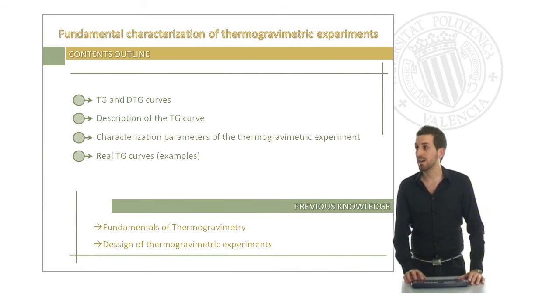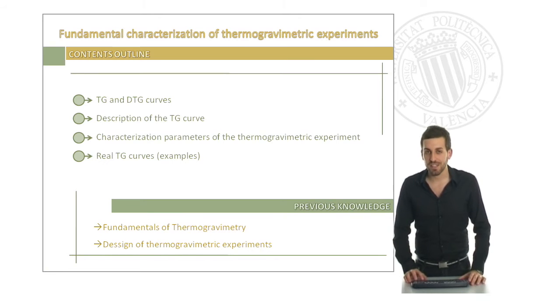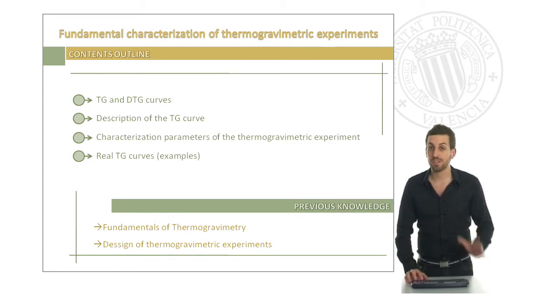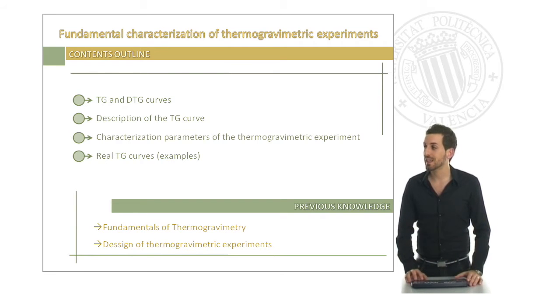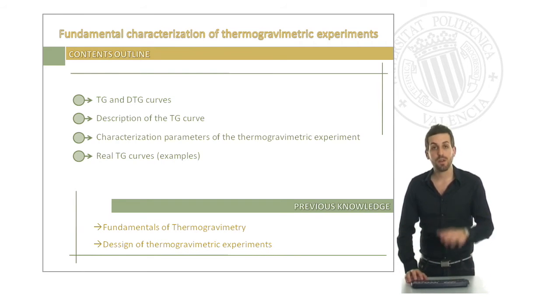This is the contents outline. First of all, we will see what are these TG and DTG curves. Then we will describe the TG curve, which is the direct response of our thermogravimetric analysis. Then we will see the different characterization parameters of our thermogravimetric experiments. And finally, I will show you some real TG curves as an example.